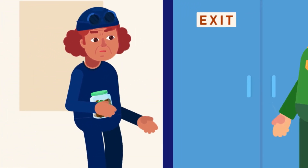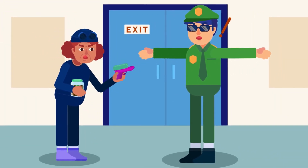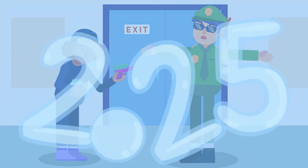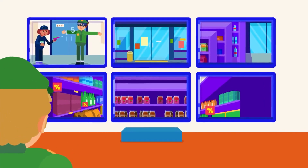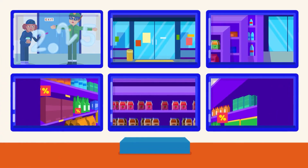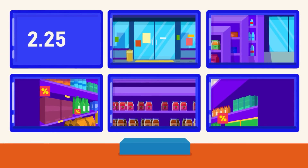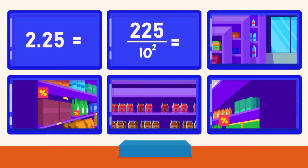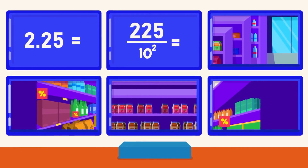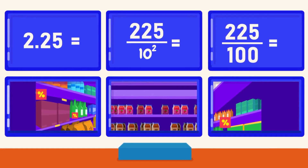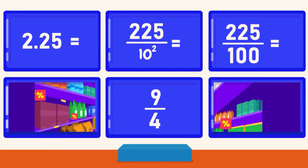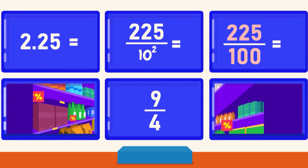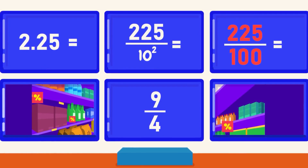Now it is your turn to do the conversion from decimal to fraction. Convert 2.25 to a fraction. You can pause the video, have a go, and then resume the video to see the problem-solving process. First, we will count the number of spaces after the decimal point, counting from the left. The number of spaces is 2. Therefore, once we remove the decimal, the number will be divided by 10 to the power 2. So, 2.25 equals 225 over 100, which equals 9 over 4. 9 over 4 is obtained by simplifying 225 over 100 by dividing both numerator and denominator by a common divisor of 25.